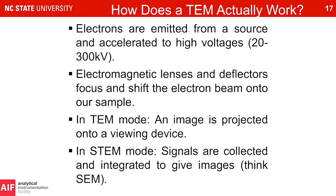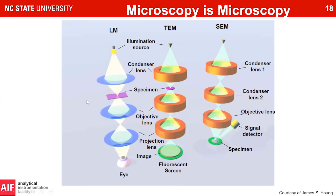If we compare an electron microscope to a light microscope, ignoring 99% of the optical components, they are actually incredibly similar: an illumination source, a condenser lens to collimate the beam and project it onto the specimen, an objective lens to form images, and a projection system to magnify and project the image onto a CCD, fluorescent screen, or other imaging device. The components and optical properties of TEM and light microscopes are quite similar. SEM and STEM are substantially different — they shine a very small probe onto the sample and detect integrated signals.